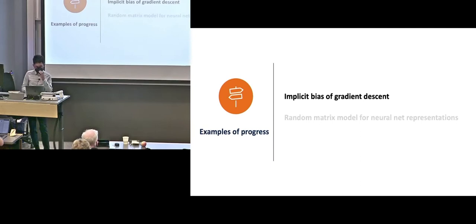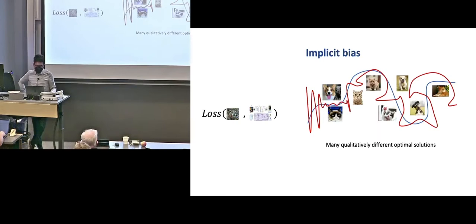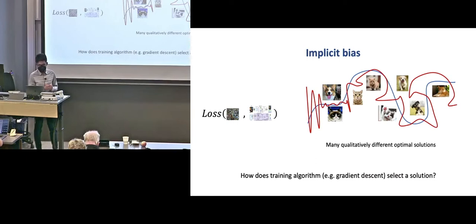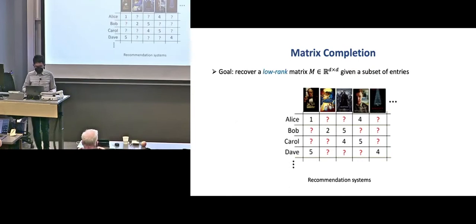Okay, so next, I'm going to very briefly talk about some examples of progress in the theory of deep learning to give you an idea of what's going on in this area. So first, I'm going to talk about something called implicit bias of gradient descent. So I mentioned that when we optimize a training objective, it's possible that there are many qualitatively different optimal solutions, like this red one and blue one. So they all optimize the training loss, but they can have very different generalization properties. So now we have realized that there is an implicit bias coming from the training algorithm, because we use specific algorithms to optimize this loss function, and the algorithm might just prefer certain kind of solutions. So the question is, how does the training algorithm, for example, gradient descent or stochastic gradient descent that are commonly used, how does the algorithm select a solution?